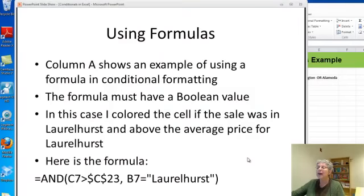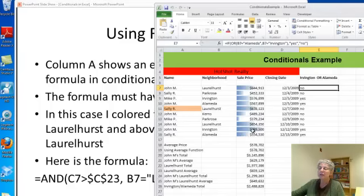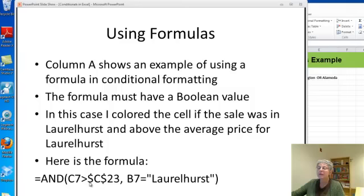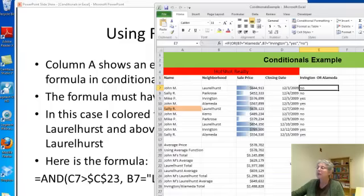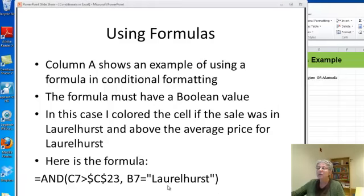You can also use formulas. Column A shows an example where I wanted to figure out where any cells were bigger than the average, and then I would highlight the name of the person in column A when that was true in that row. So it turned out there was only one. Here's the formula, and it says if C7, notice this one is a relative address, is bigger than the average, and C23, which is the Laurelhurst average, then I'm going to, and I also want B7 to equal Laurelhurst. And that's my condition. So if both of those are true, then there was a sale in Laurelhurst that was bigger than the average for Laurelhurst. I'm going to highlight my cell here.